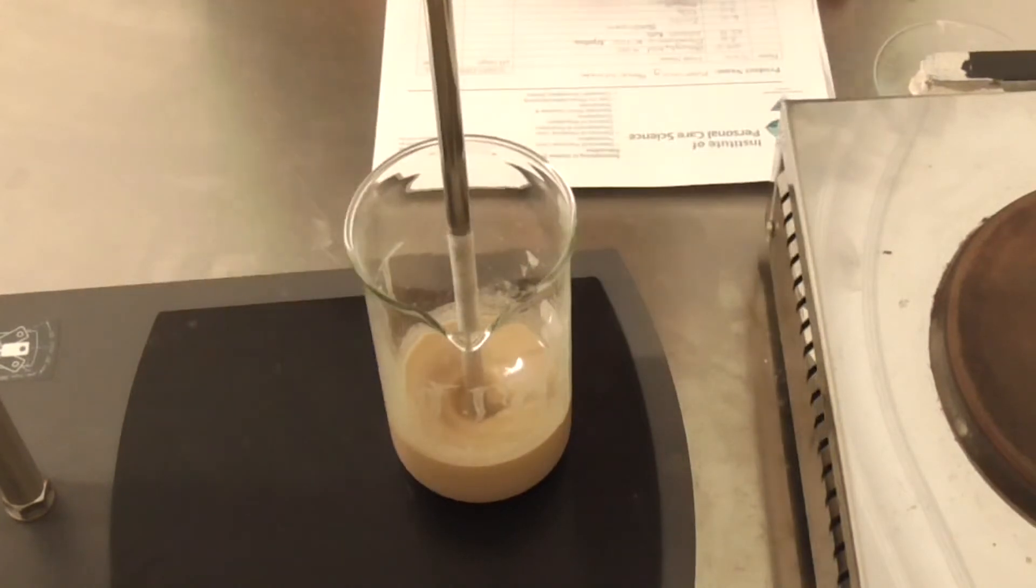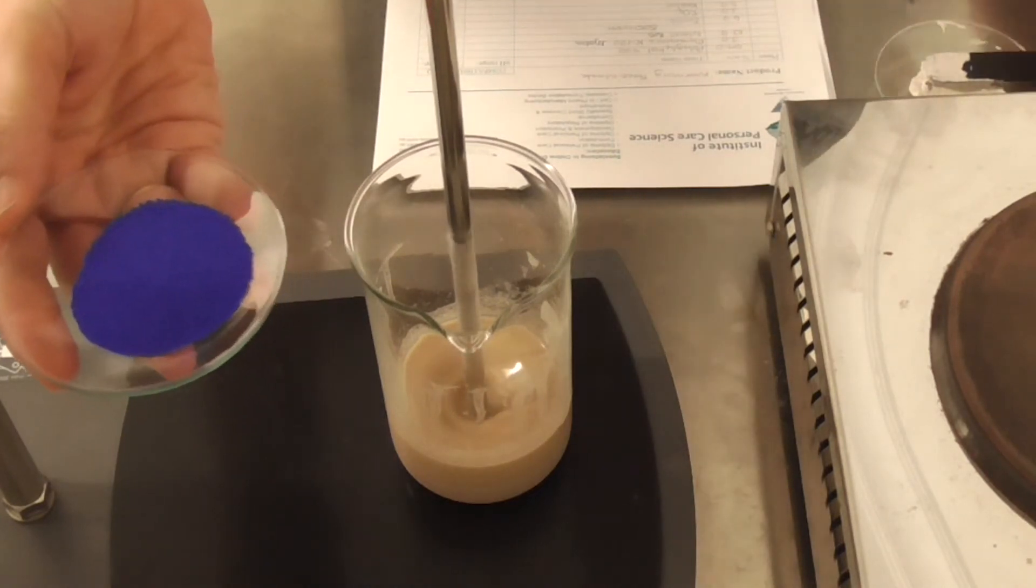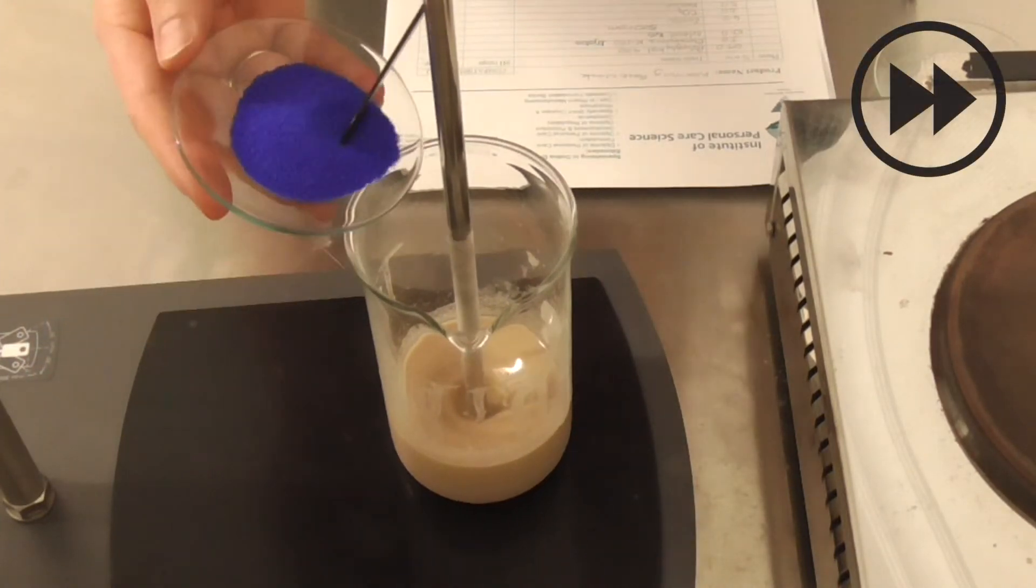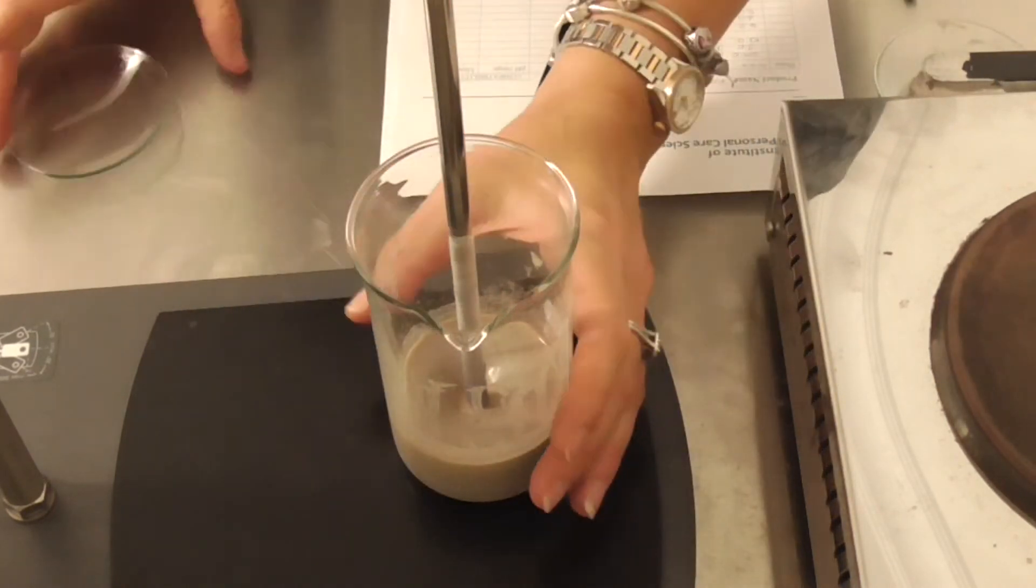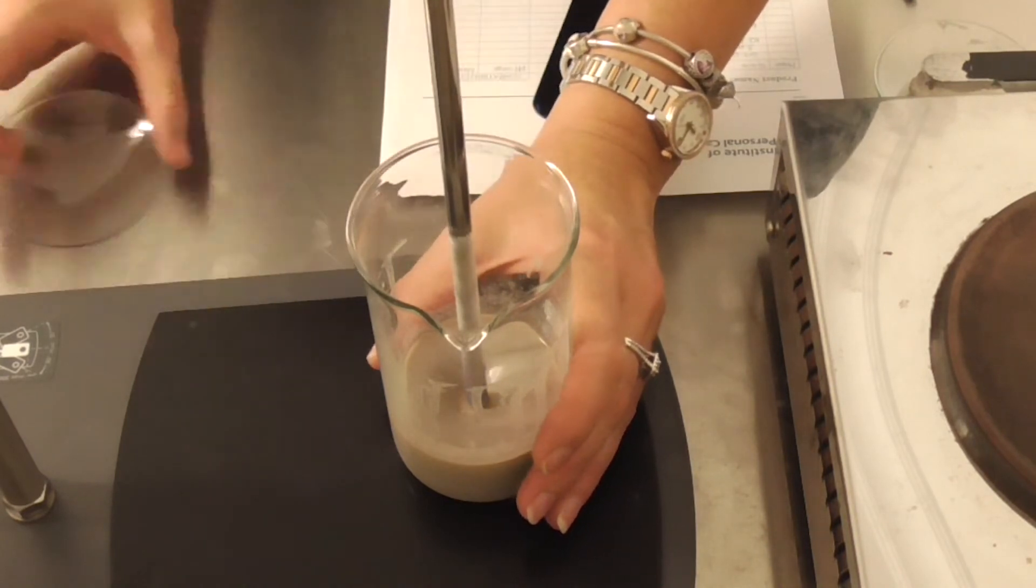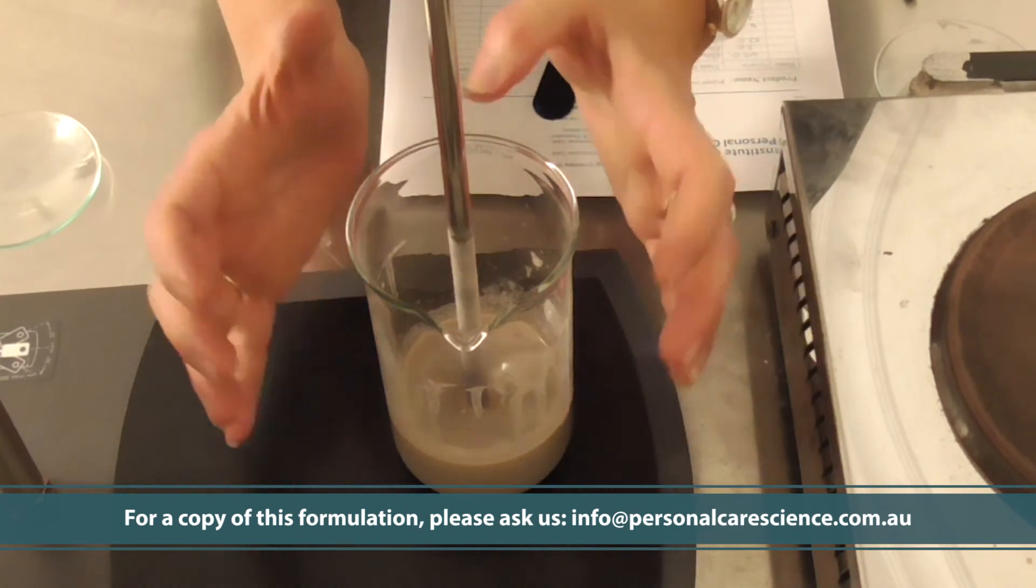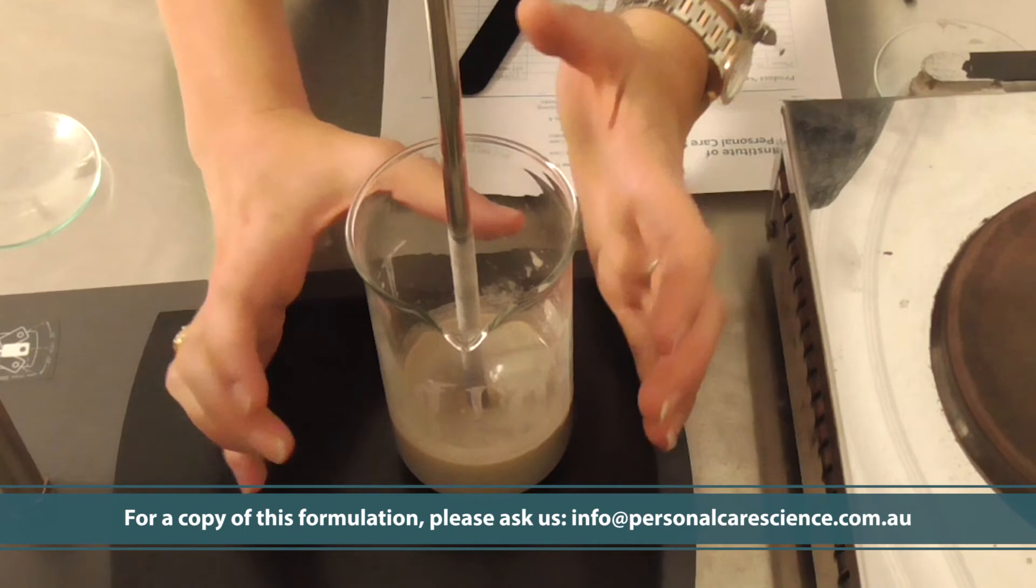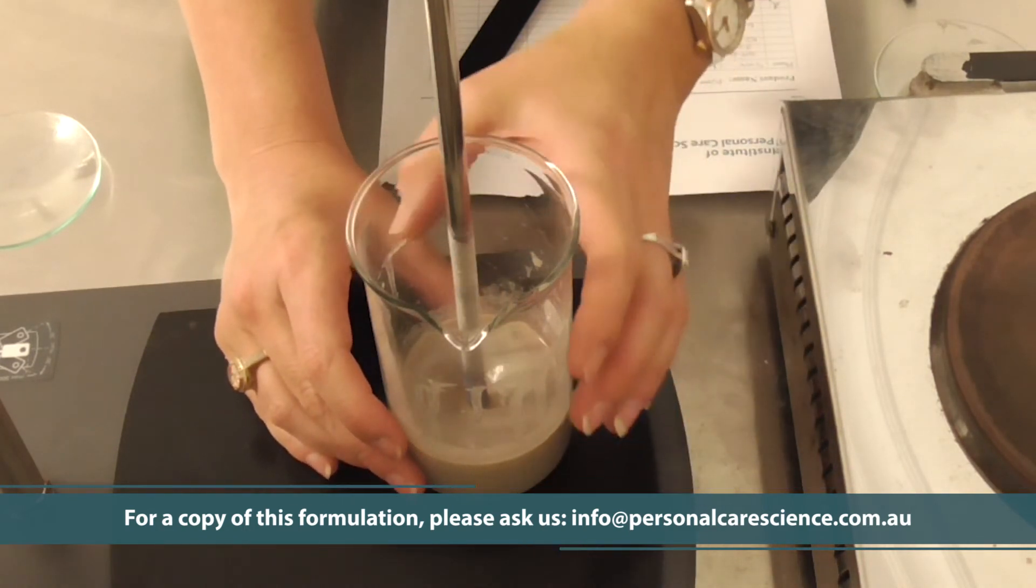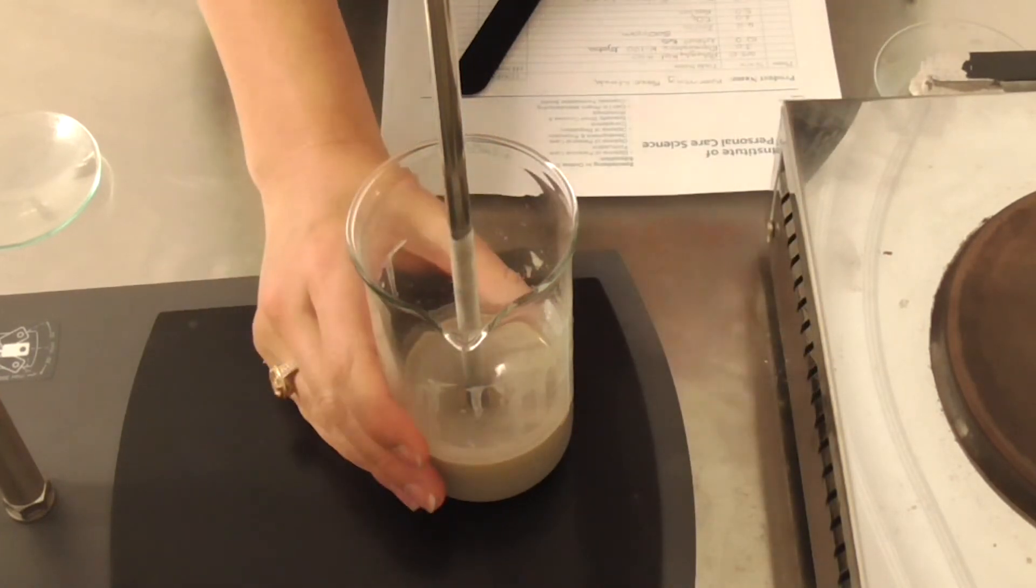Now once your mix has cooled below 50 degrees we can now add these very pretty and eye-catching blue beads. We do need the mixture to have cooled a bit not only so that it doesn't melt these beads but also so that the structure in this mask from the Arlaseur 165 and also the semi-paste-like consistency can actually hold these beads in place so that they don't settle to the bottom or float to the top.